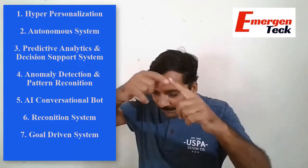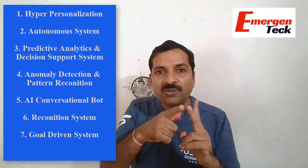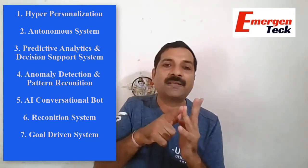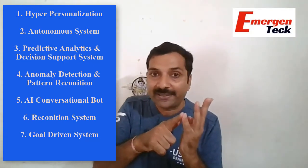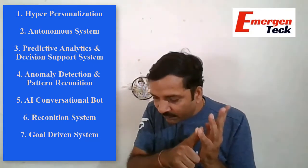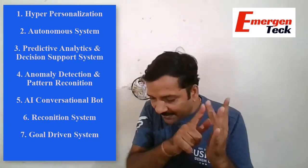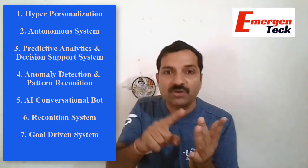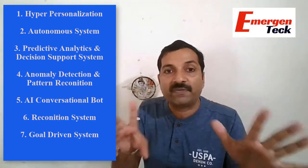Let me quickly recap the seven patterns. Number one is hyper personalization. Number two is autonomous systems. Number three is predictive analytics and decision support systems. Number four is anomaly detection and pattern recognition. Number five is AI conversational bot. Number six is the recognition system. And last but not least is the goal driven system. These are the total seven patterns that exist across everywhere.